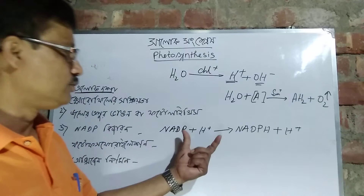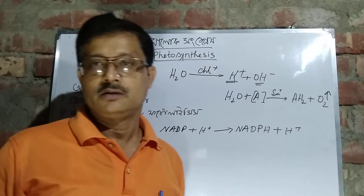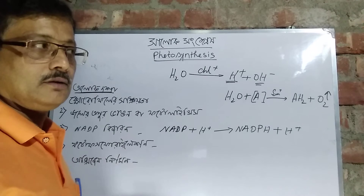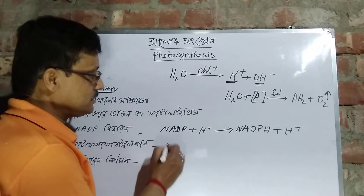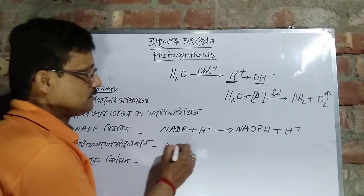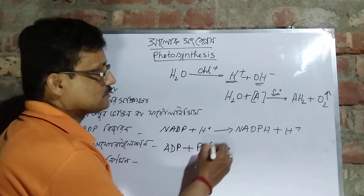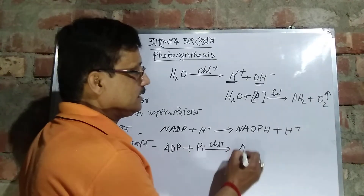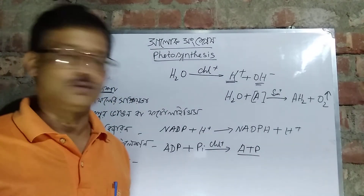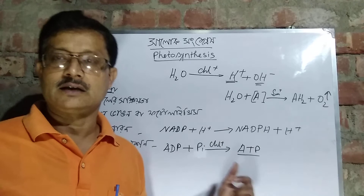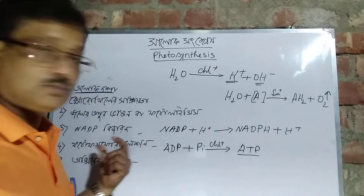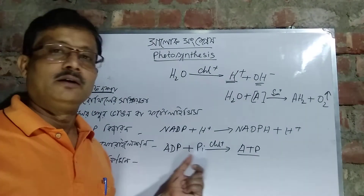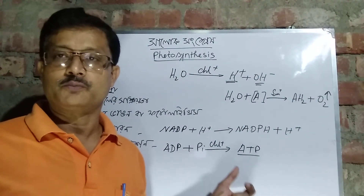NADP plus hydrogen is the same as NADPH. This is photophosphorylation. This involves ADP — adenine dinucleotide phosphate. In the presence of light energy, ADP is converted. This is the source of ATP. The first source of ATP is photophosphorylation.